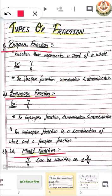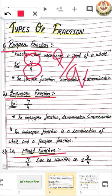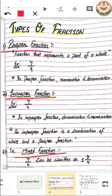Now let's recall what is numerator and denominator. Numerator is the number which is the dividend and denominator is the number which is the divisor in a p by q form. Similarly, let's recall what is improper fraction.